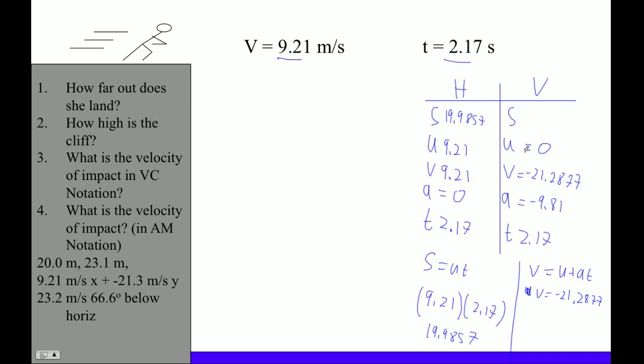And then our displacement, we could use S equals UT plus one-half AT squared. So that's just going to be on this side, it's going to be zero plus one-half times negative 9.81 times 2.17 squared. So 0.5 times negative 9.81, so it's going to displace itself down, times 2.17 squared. And I get S equals negative 23.097 meters.